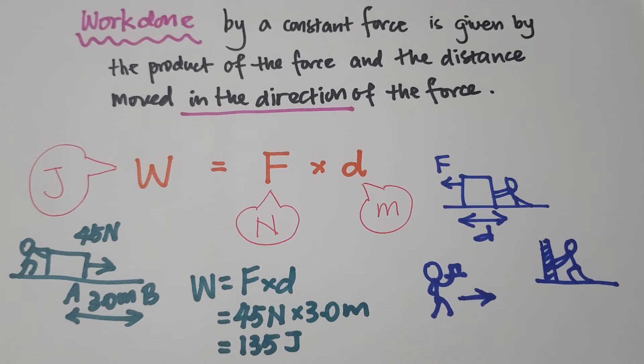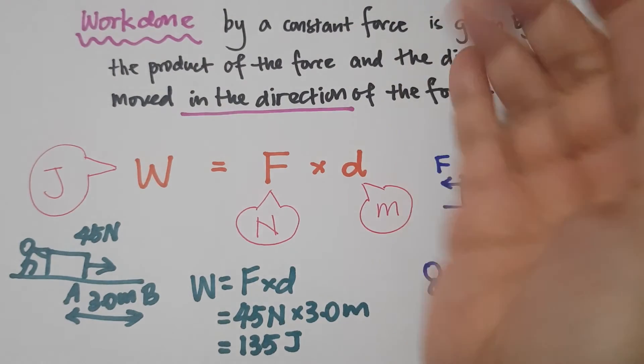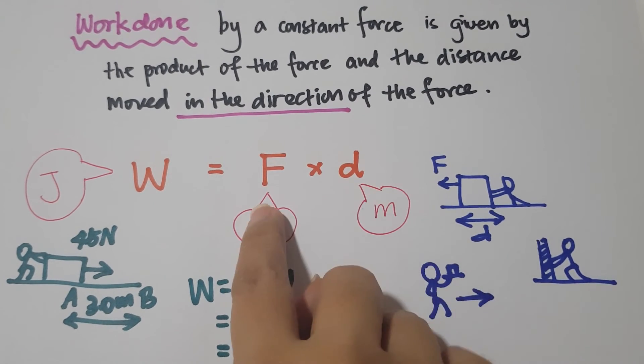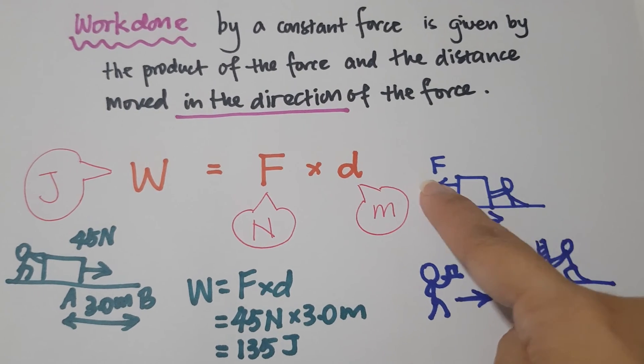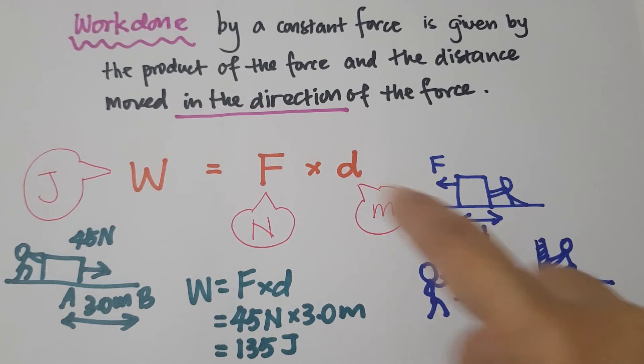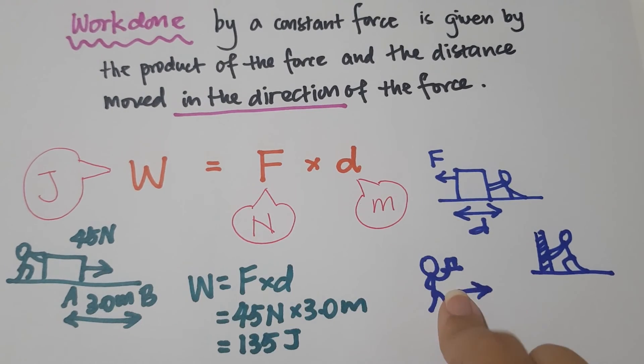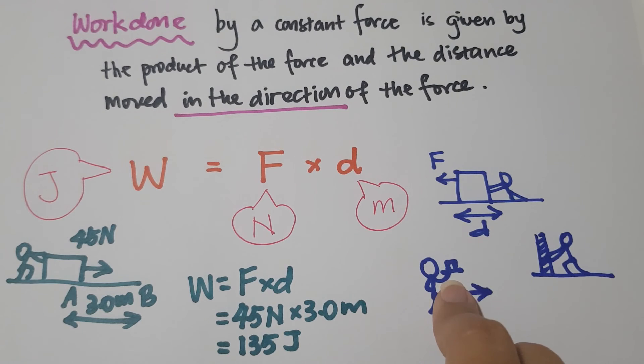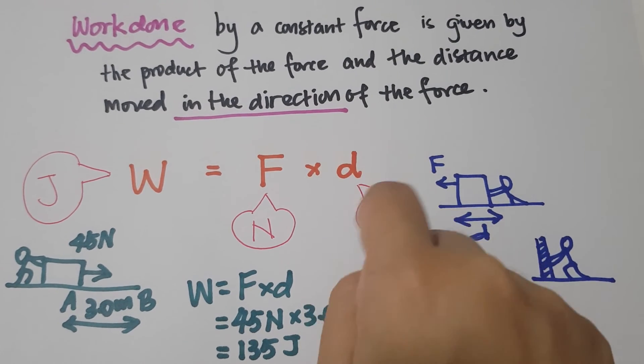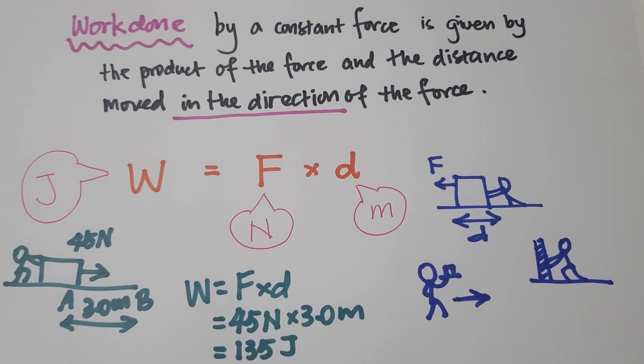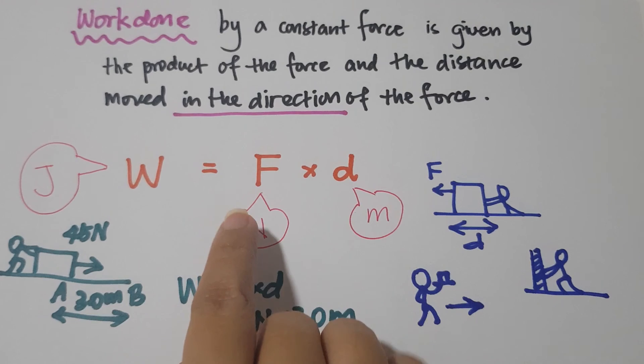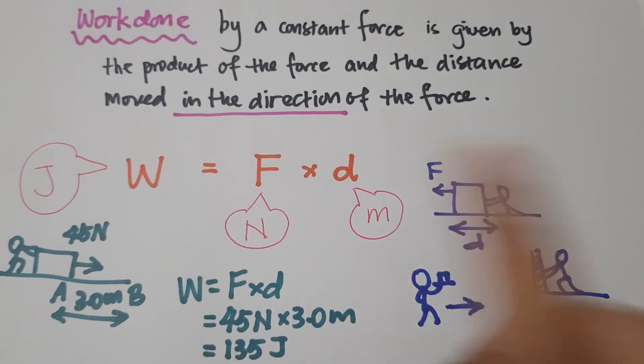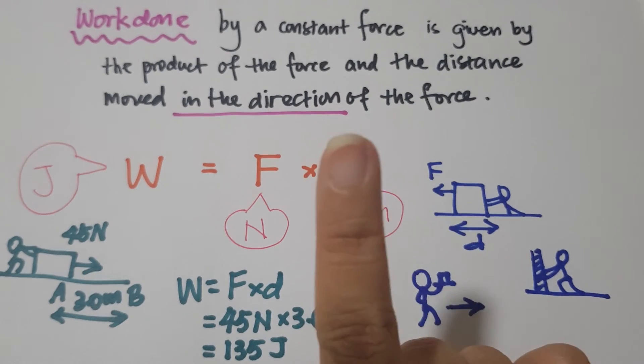So I hope after watching this video you have a better idea of what work done is. Work done by a constant force is given by the product of the force and the distance moved in the direction of the force. So if you are pushing it this way, there should be a distance moved in this direction, and if you are pushing it this way, it should move in this direction. If you are exerting a force on an object but not moving in the same direction of the force you are exerting, there will be no work done on that object. And if there is no movement at all, the distance moved in the direction of the force is zero, so there will be no work done. And remember that the SI unit for work done is joules, and you always calculate using the SI unit of force and distance, that is in newton and meter. Revise your topic well and I will see you in my next video. Bye-bye.